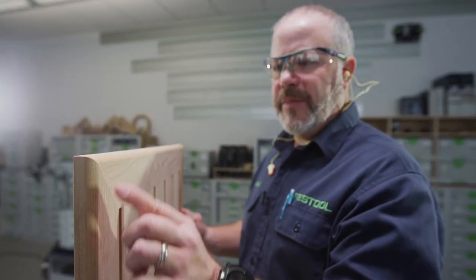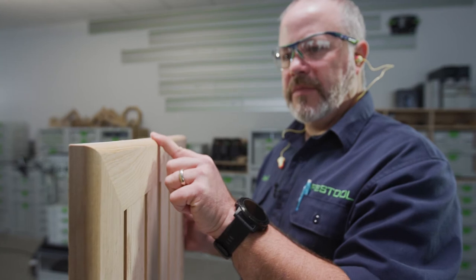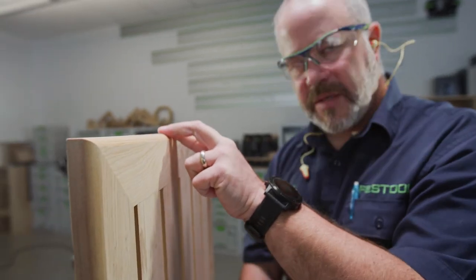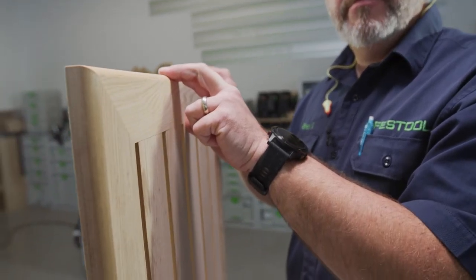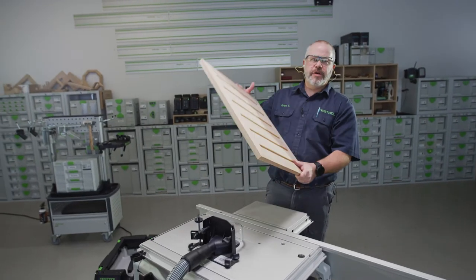So now that I've ran it through a second time, you can see it smoothed all that out. So it's super important that you keep constant pressure on the workpiece the entire time through the router table. It's now ready to flip it over and run all four edges of the other side.